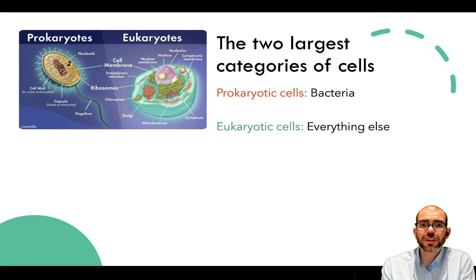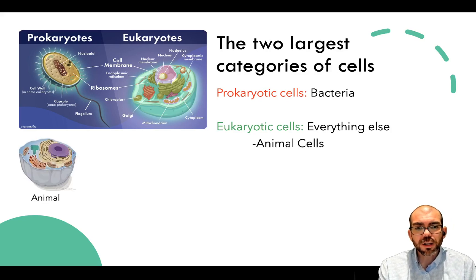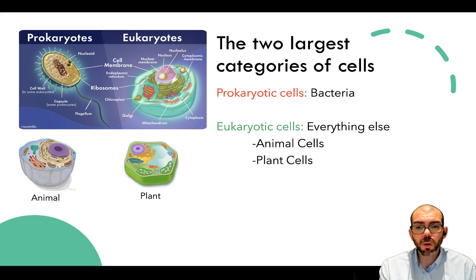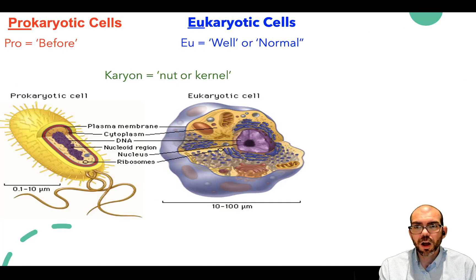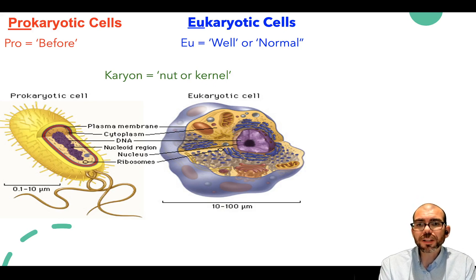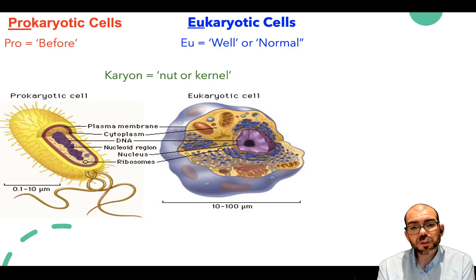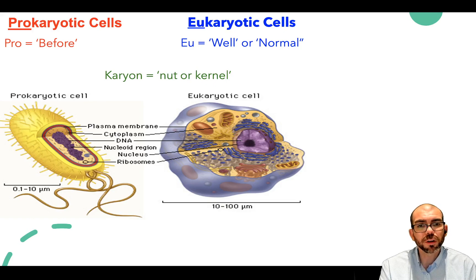The two largest categories of cells are prokaryotic cells—those are primarily bacteria—and eukaryotic cells, which make up everything else in terms of life we've discovered so far. Eukaryotic cells can be either animal or plant cells. Looking at the etymology, 'pro' means before and 'karyon' means nut or kernel—these are cells that don't have a nucleus. 'Eu' means well or normal, so eukaryotic cells do appear under the microscope to have a nut or kernel—you can see a dot in the middle for the nucleus.